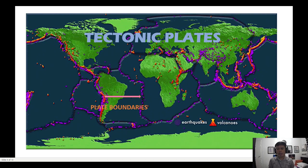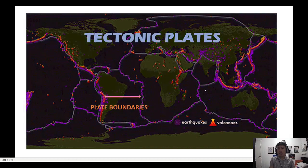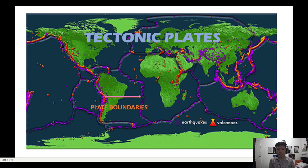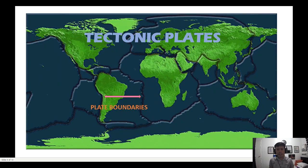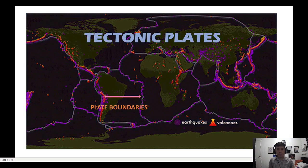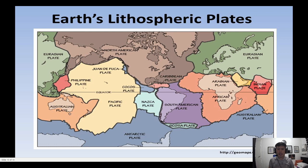As mentioned, the lithosphere is broken down into smaller pieces known as tectonic plates, separated by edges called plate boundaries. Tectonic plates can be categorized into two types: primary plates and secondary plates. There are 15 major plates in total — seven of them are primary plates, which are the larger plates, and the remaining eight are secondary plates, which are the smaller ones.